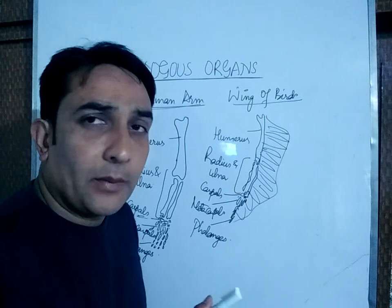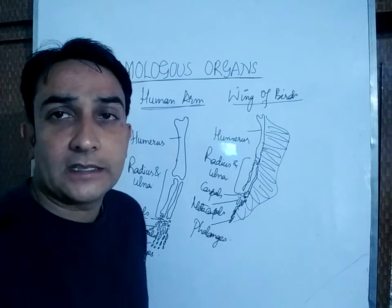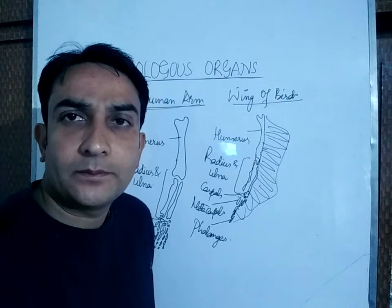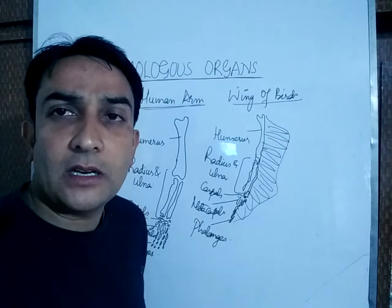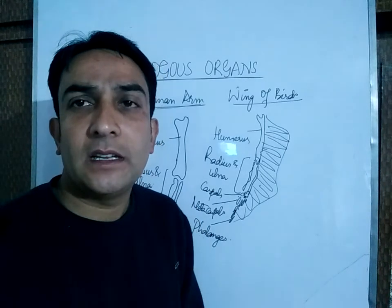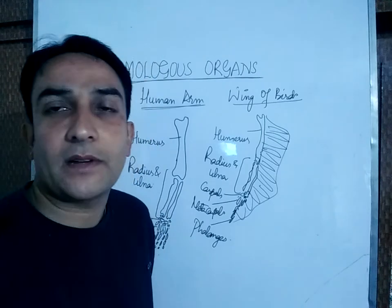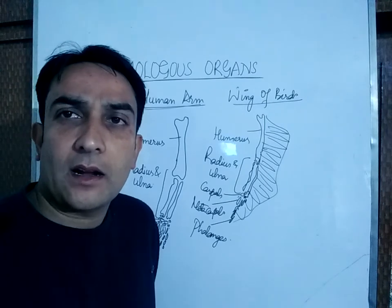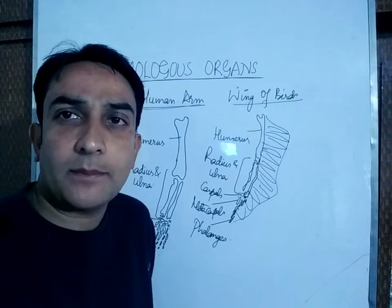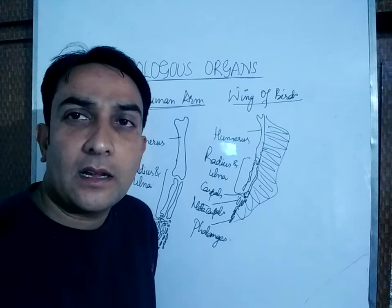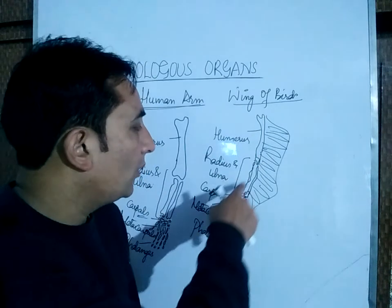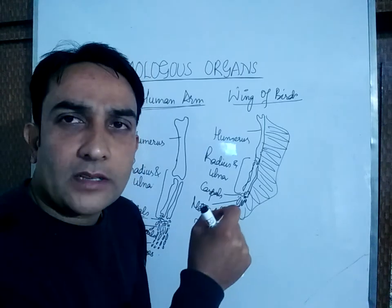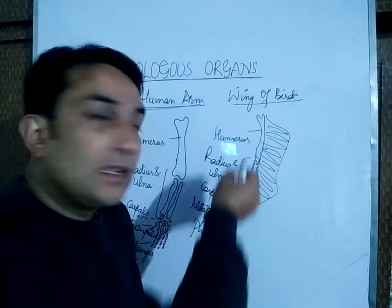This is the wing of the bird and this is the arm in case of human beings. When we see the functions of these organs, the functions are totally different. The wing of the bird helps in flight and the arm of human beings has a different function. Similarly, the flipper of the whale has a totally different function — it helps the whale in swimming — but the same plan of bones is present in the flipper of the whale also.